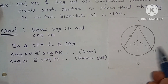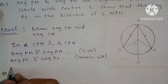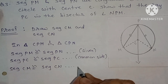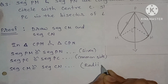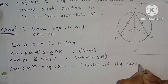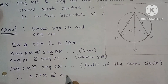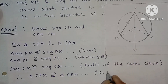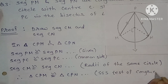Segment CM is congruent to segment CN because these are radii of the same circle. Therefore triangle CPM is congruent to triangle CPN by the SSS test of congruency — side, side, side.